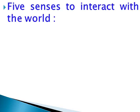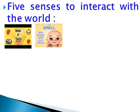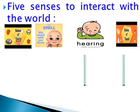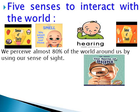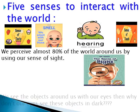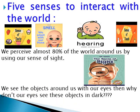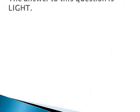We have five sense organs to interact with the world: sense of taste, sense of smell, hearing, sense of touch, and sense of sight. We perceive almost 80% of the world around us by using our sense of sight. So our most important sense is sight. Then the question arises: we see objects around us with our eyes, then why don't our eyes see those objects in dark?